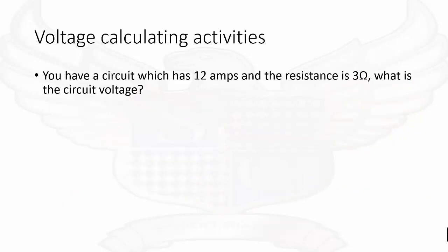We're going to do voltage calculating activities. You have a circuit which has 12 amps and the resistance is 3 ohms. What is the circuit voltage? If you look back at your Ohm's Law triangle, if you'd like to work out the voltage, it's current multiplied by resistance, which will give us 36 volts.